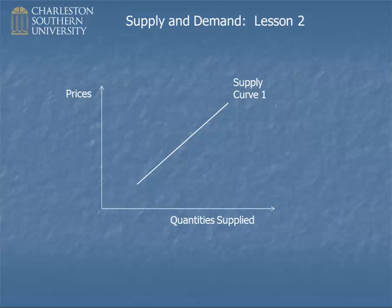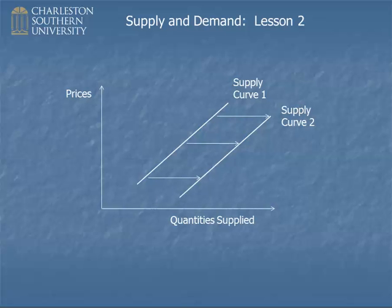Let's do the same thing for a supply curve. A supply curve shifting out to the right would look like that. But if you thought of it as an upward or downward shift, it looks like the supply curve moved down — that's why it's so confusing. Imagine being rattled on a test: when the demand curve moves up, that's an increase, but when the supply curve moves down, that's also an increase. So I don't recommend learning it that way. Instead, think of the shift as a right or leftward shift. The rule is exactly the same for a demand curve as for a supply curve — when the supply curve shifts to the right, that's an increase. A decrease would be a shift back to the left.